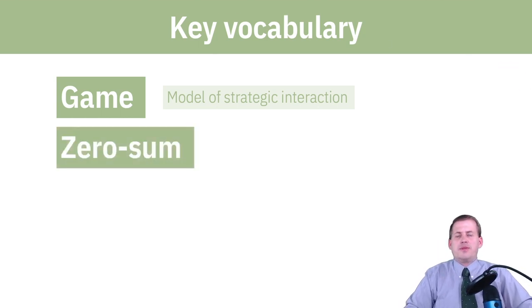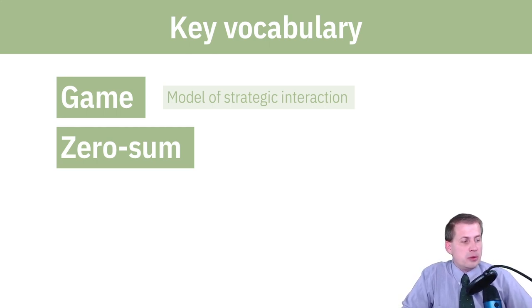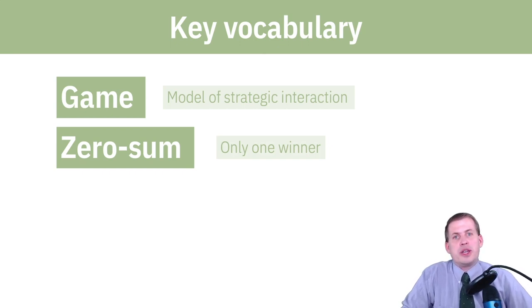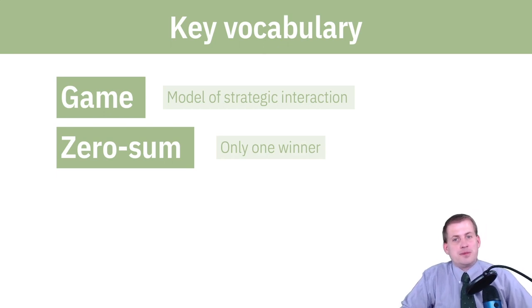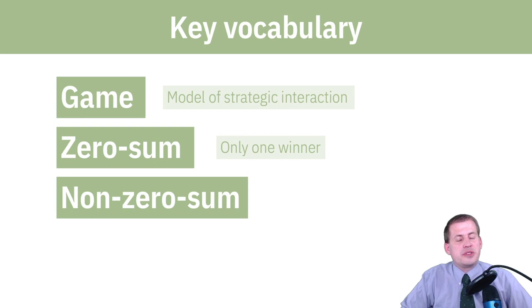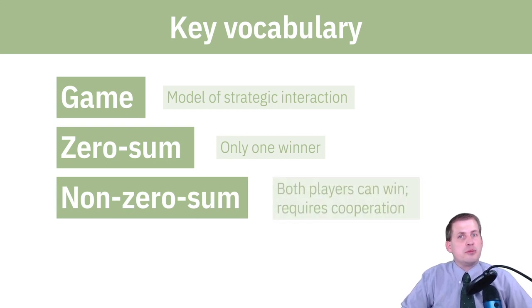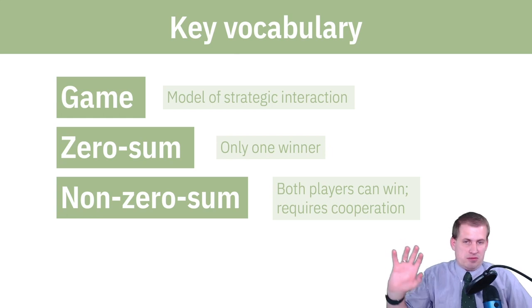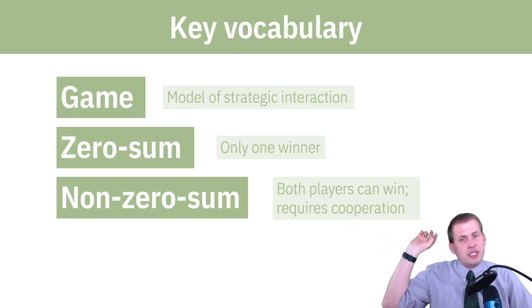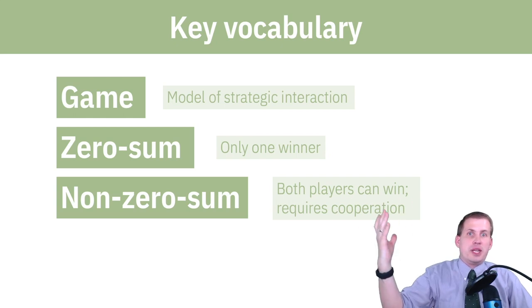Another key vocabulary term is a zero-sum game, which means there's only one winner in the interaction — only one person will walk away with the most points, and the other person will be a loser. A non-zero-sum game is the opposite: anybody can win. If people can cooperate, then both players will come off better. Zero-sum means only one winner; non-zero-sum means everybody can win.